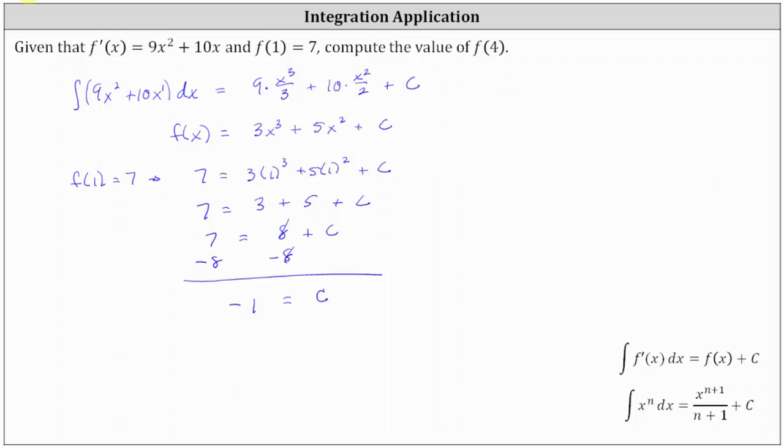So now we know the specific function that we want is f(x) = 3x³ + 5x² - 1. And now we can determine f(4).